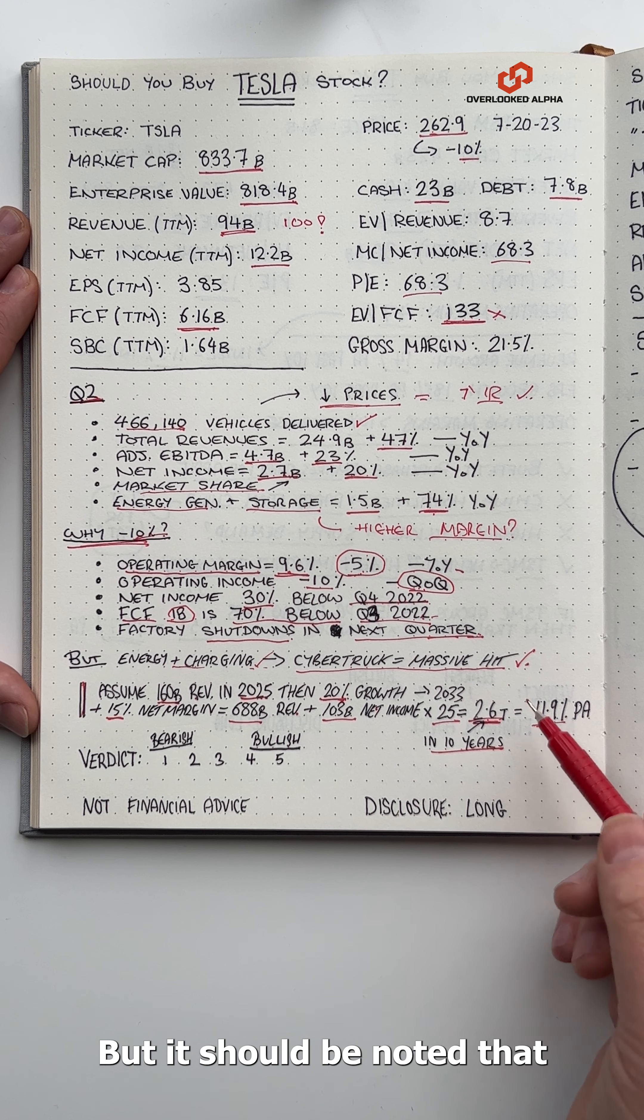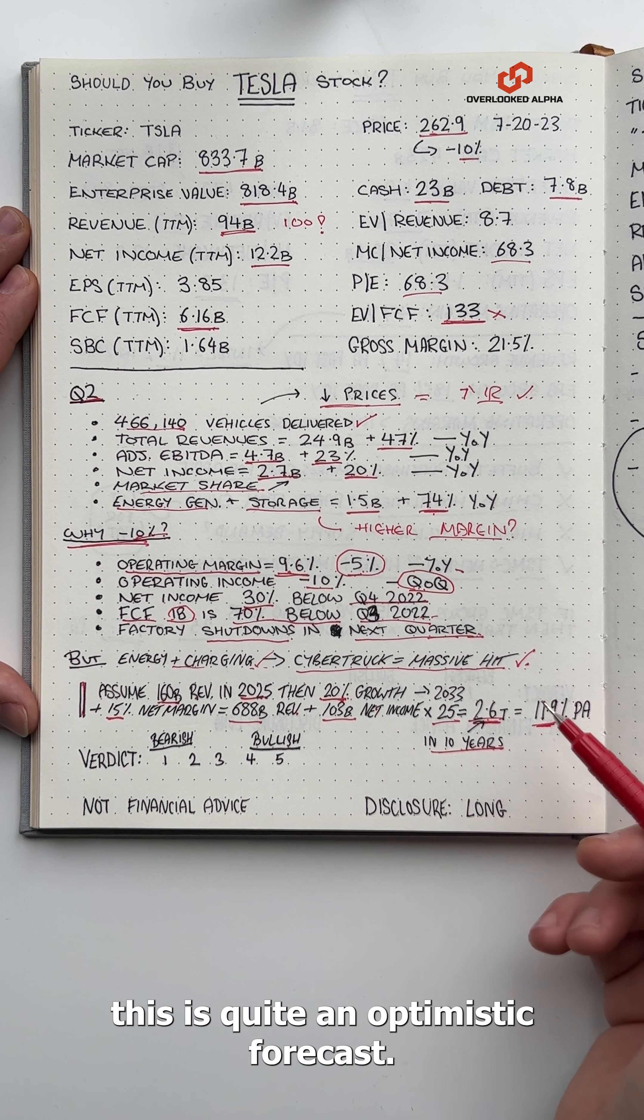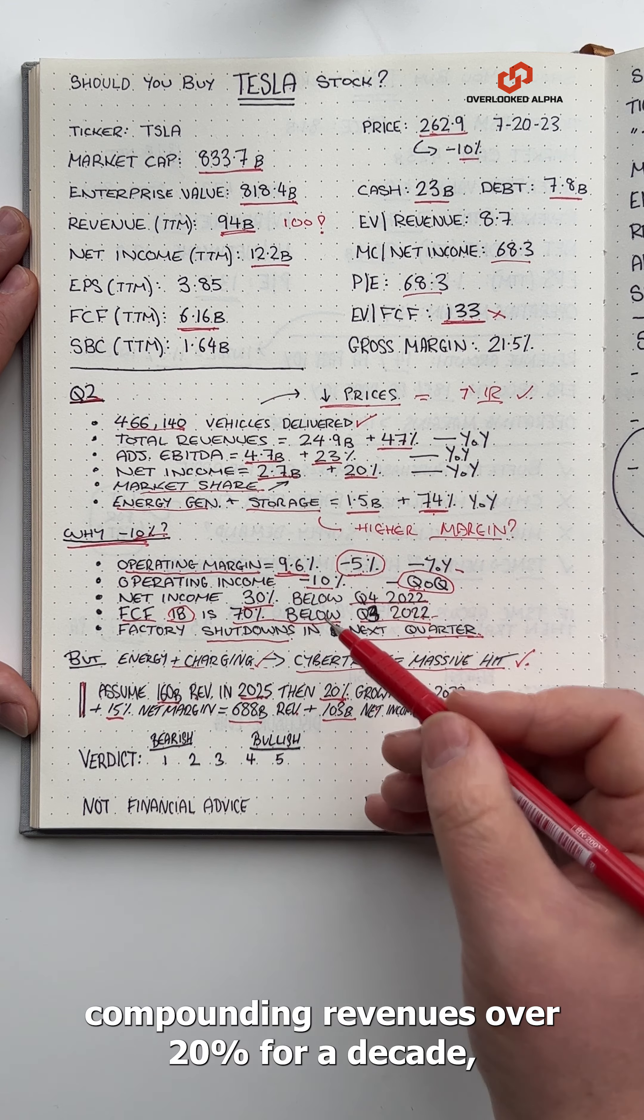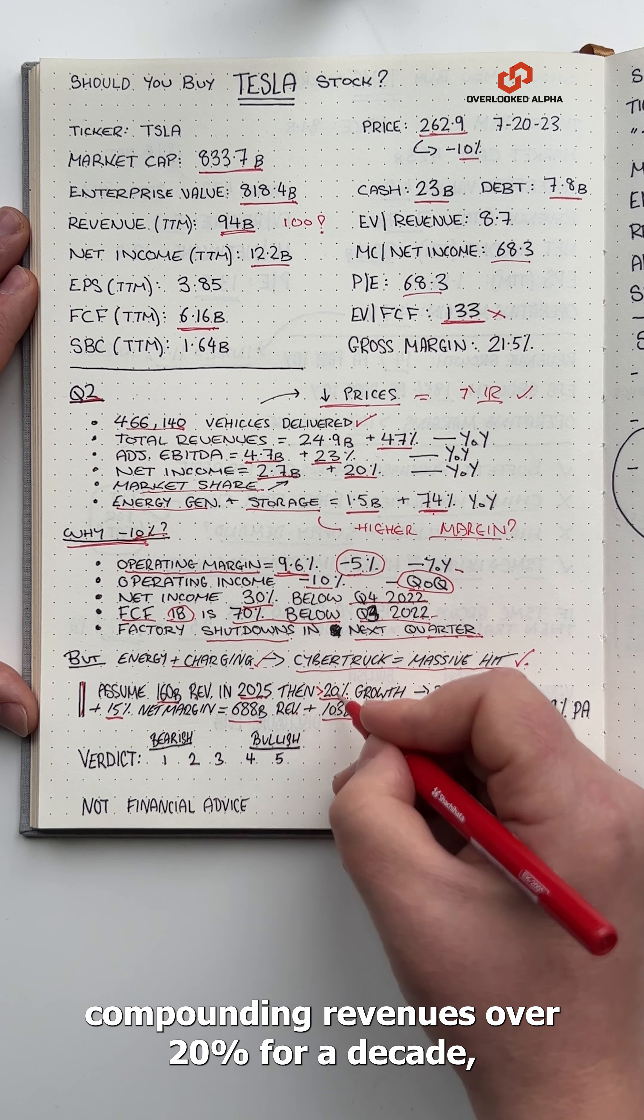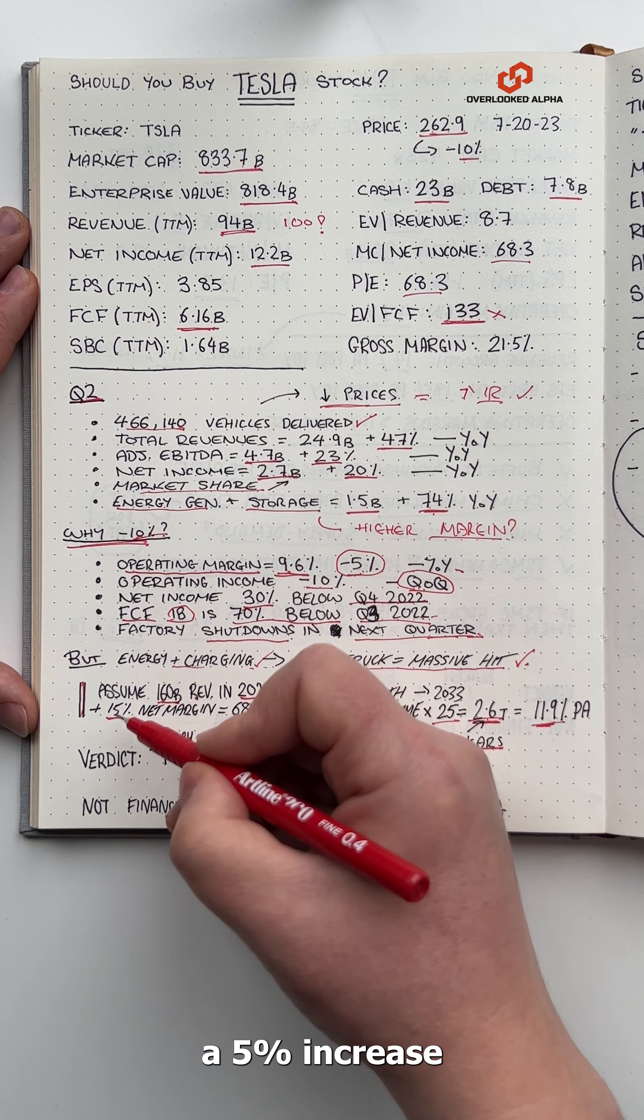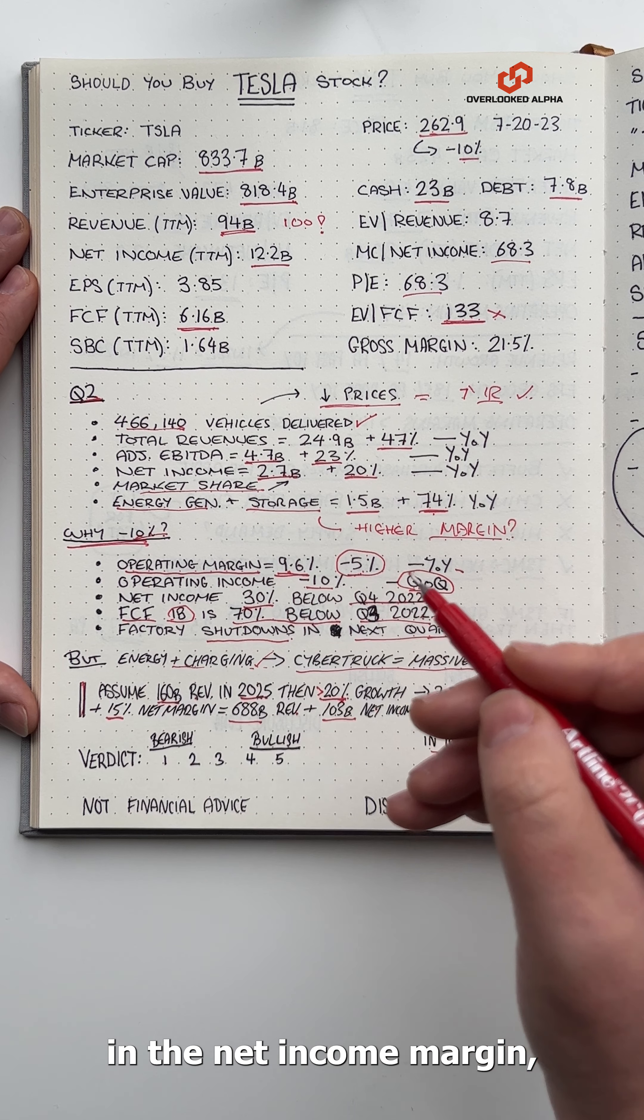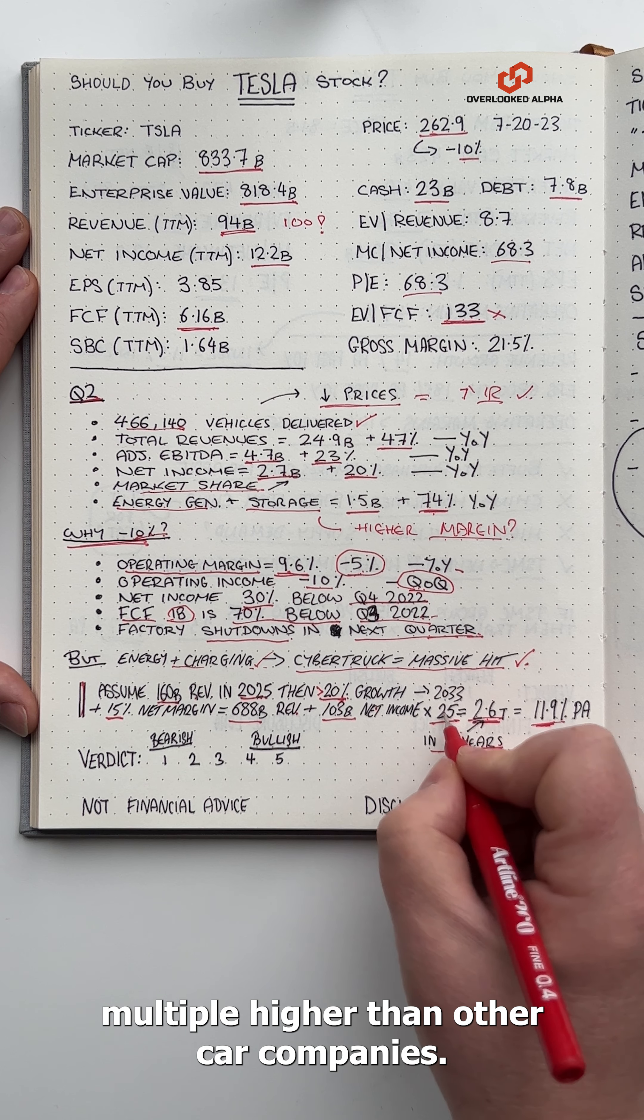But it should be noted that this is quite an optimistic forecast. It relies on the company compounding revenues over 20% for a decade, a 5% increase in the net income margin, and an earnings multiple higher than other car companies.